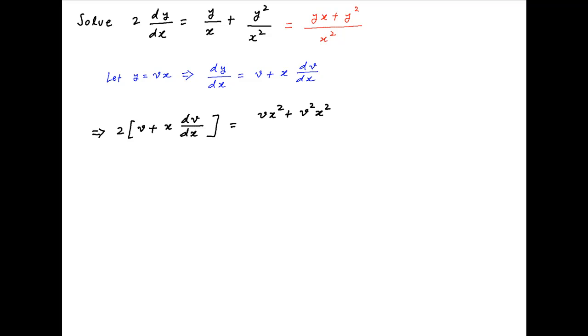divided by x². x² cancels across the numerator and denominator on the right-hand side, and therefore the right-hand side simplifies to v + v². This implies that 2x dv/dx